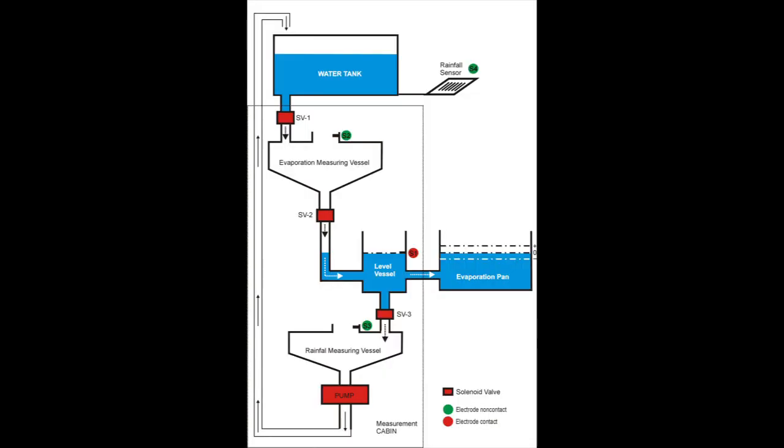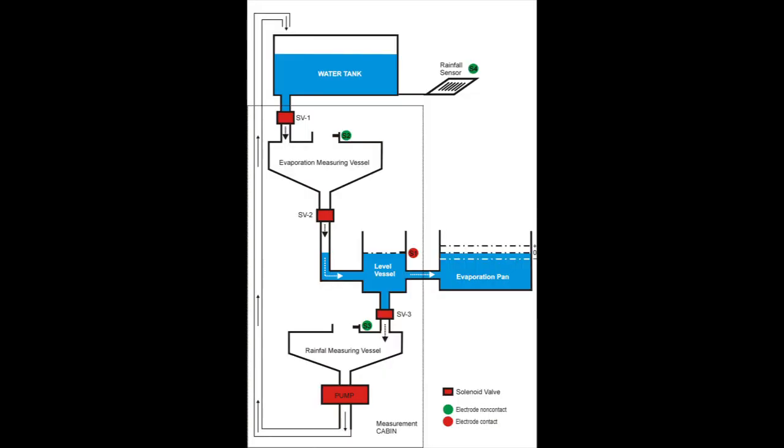I would like to introduce the components of the system. Let's check out figure one. We have measuring cups - there are three vessels used to perform evaporation and rainfall measurements. The evaporation measurement cup is located at top, the rainfall measuring vessel is at bottom, and the level vessel is located between these two and is directly linked to the evaporation pan.